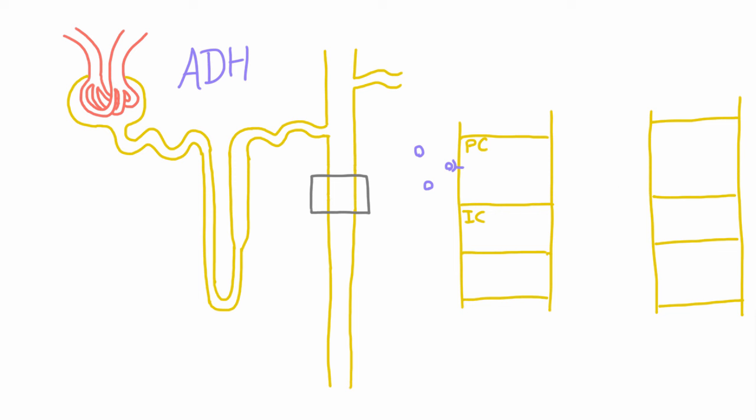And what happens when it binds to these receptors is that it causes the cell to put aquaporins into its apical membrane. So these are aquaporins, and if you recall, aquaporins are channels that allow water to pass freely. And so these aquaporins allow water from this fluid, which is basically urine at this point, they allow water to pass through and therefore get reabsorbed. So water molecules pass that way.